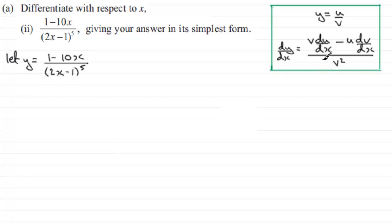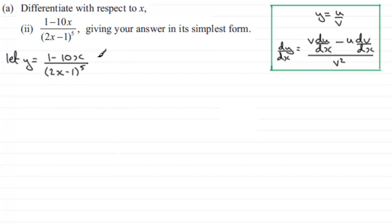I'm often asked why we can't bring (2x minus 1) to the power 5 up to the top as (1 minus 10x) multiplied by (2x minus 1) to the power minus 5 and then use the product rule. Well, you could, but it's a lot longer — try it if you're in doubt, then see if you can achieve the same final result as the quotient rule gives us.